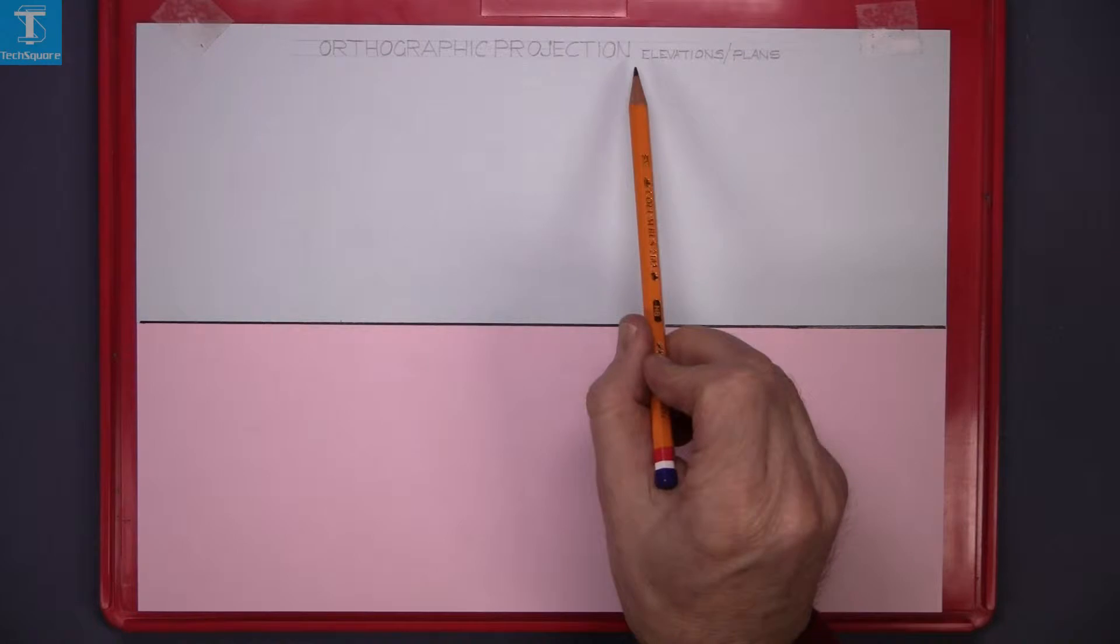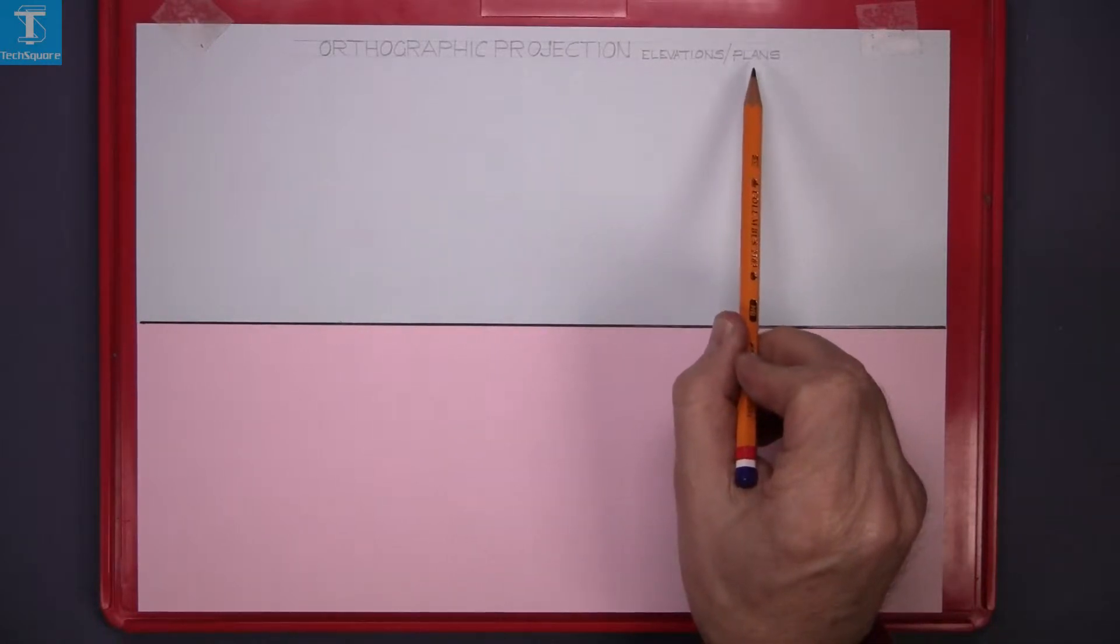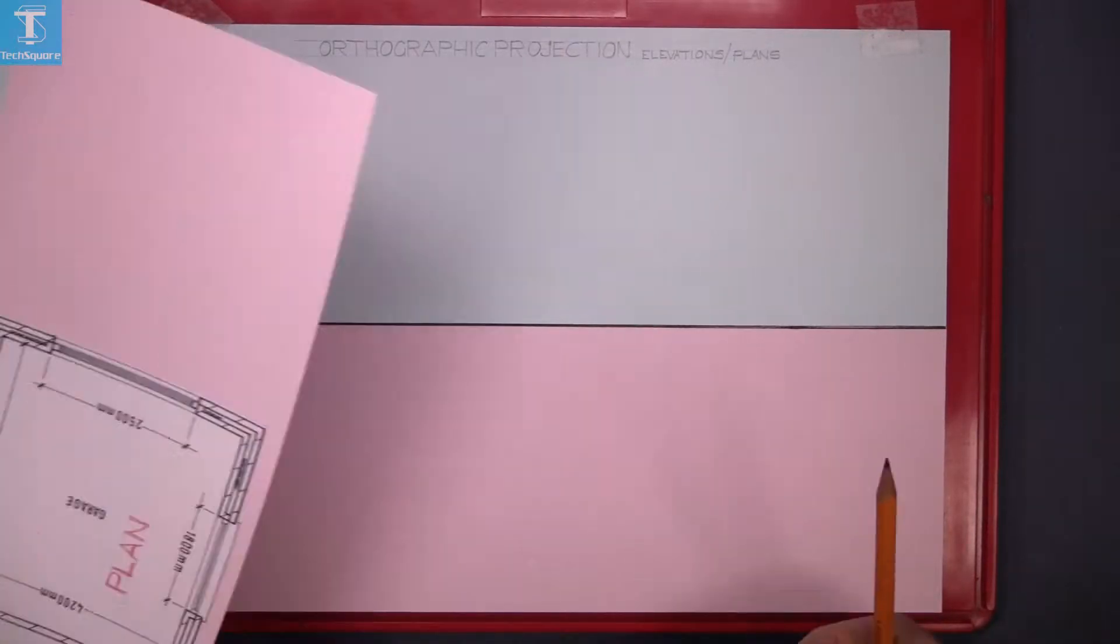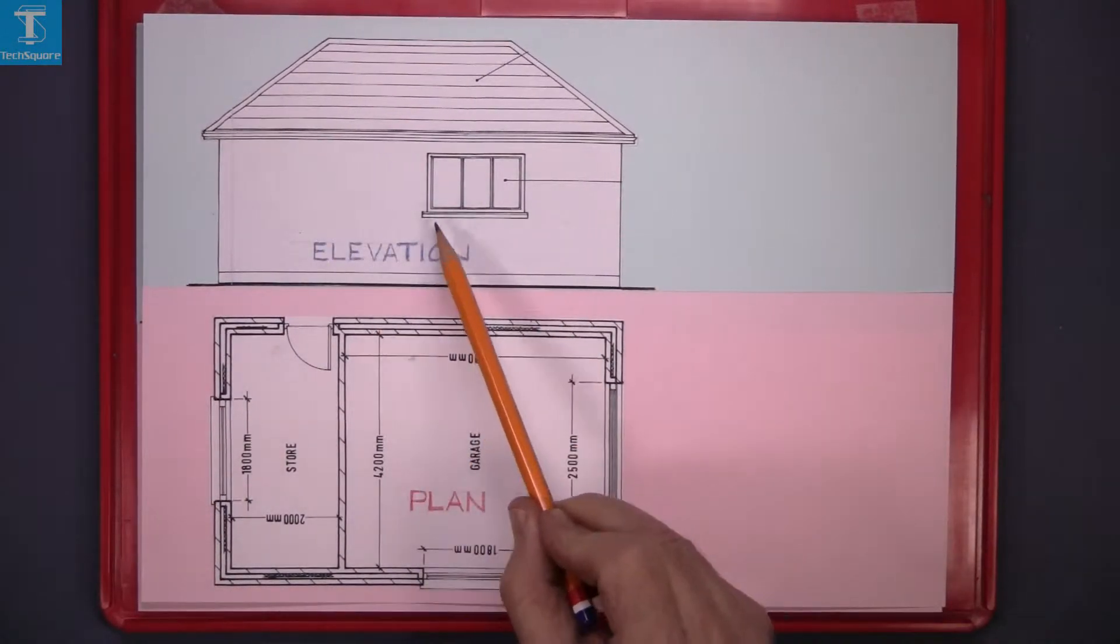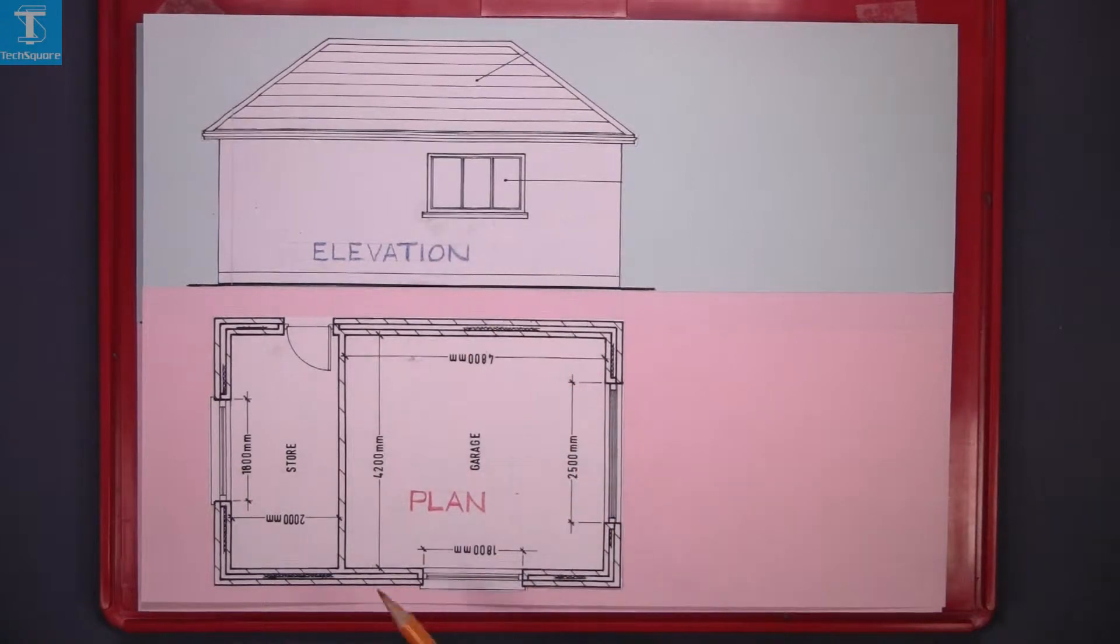Orthographic projections: elevations and plans. Here we have an elevation of a garage and this is the plan of the garage.